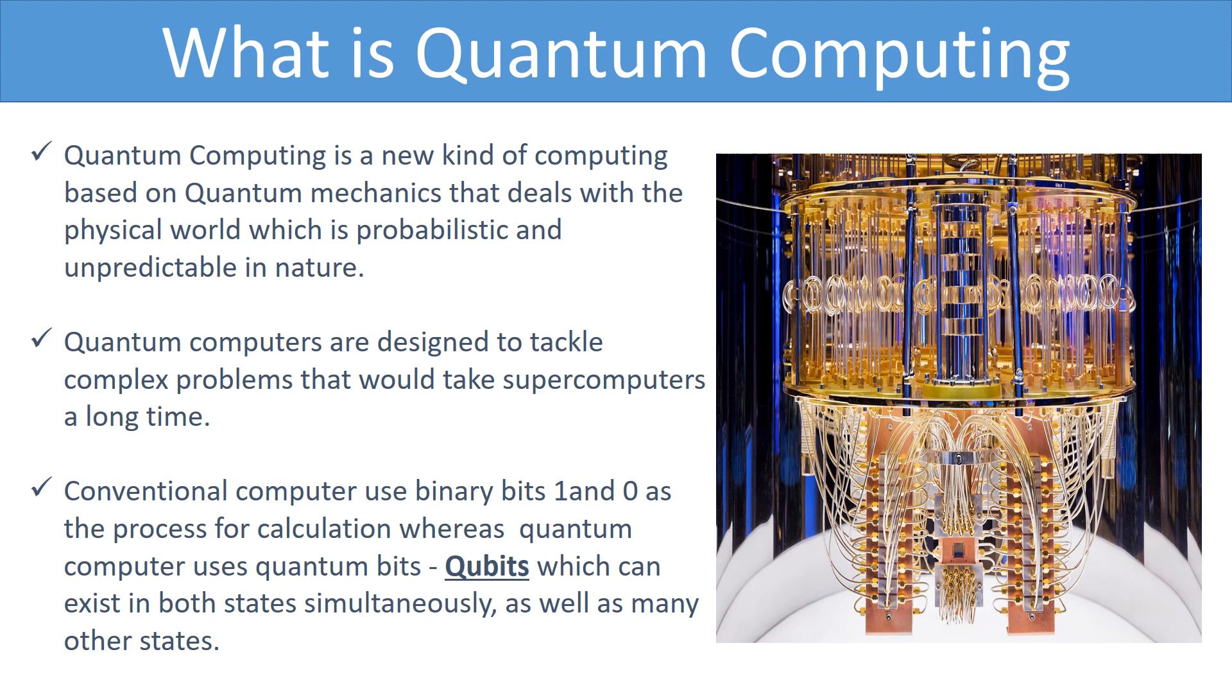Quantum computers excel in solving problems involving number or data crunching with huge amounts of inputs. They are designed to tackle complex problems that would take supercomputers from days to being unable to solve. To store and manipulate the information, they use their own quantum bits also called qubits, unlike other classical computers which are based on classical computing that uses binary bits 0 and 1 individually. So let's understand more about qubits next.